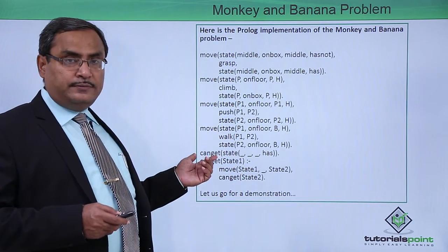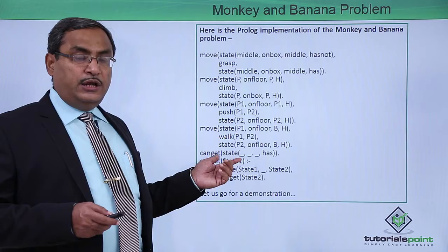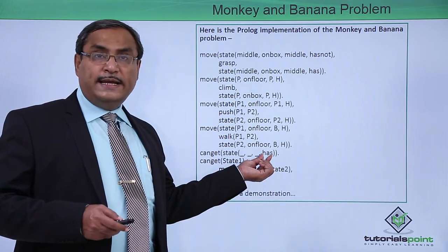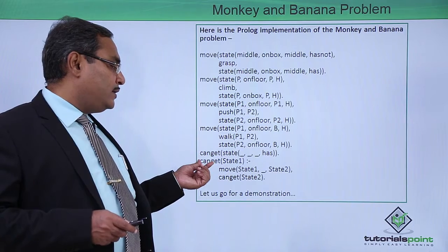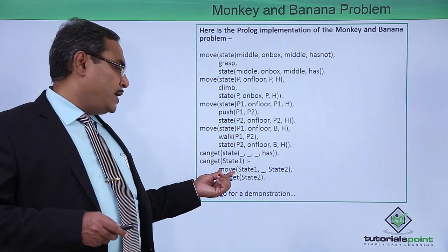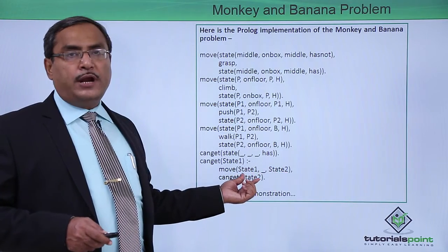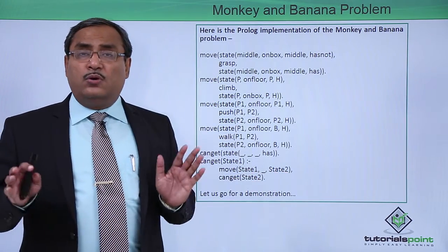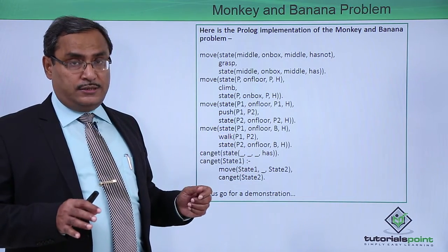This is our can_get predicate. Can_get will terminate if the fourth argument is 'has'. Otherwise, we can call can_get by going for a move to get a new state, and then can_get will be operated again on the new state. This is the respective sample code for the discussion.